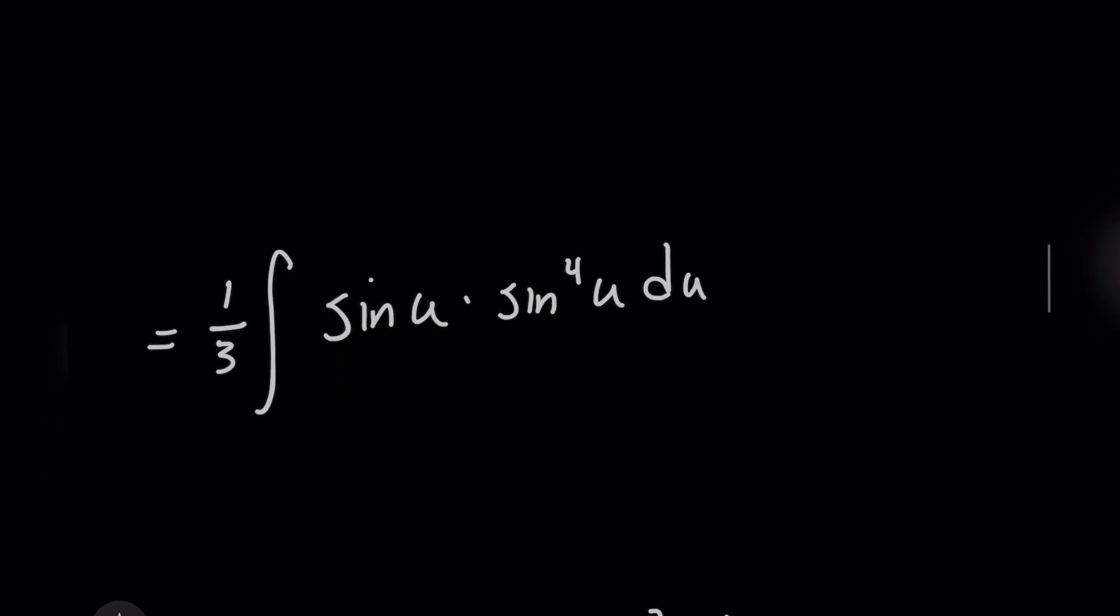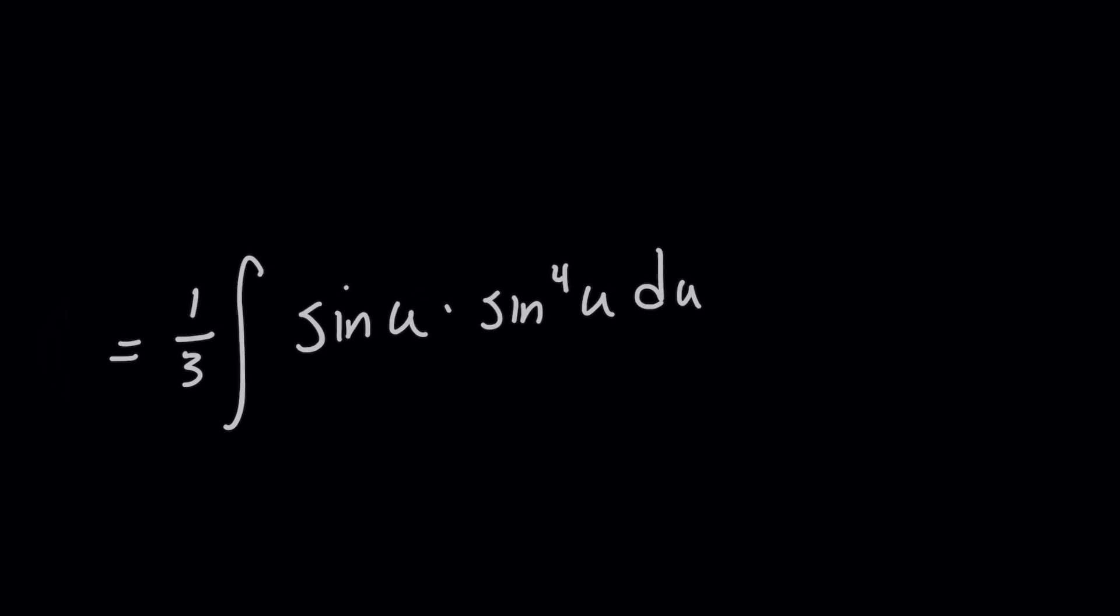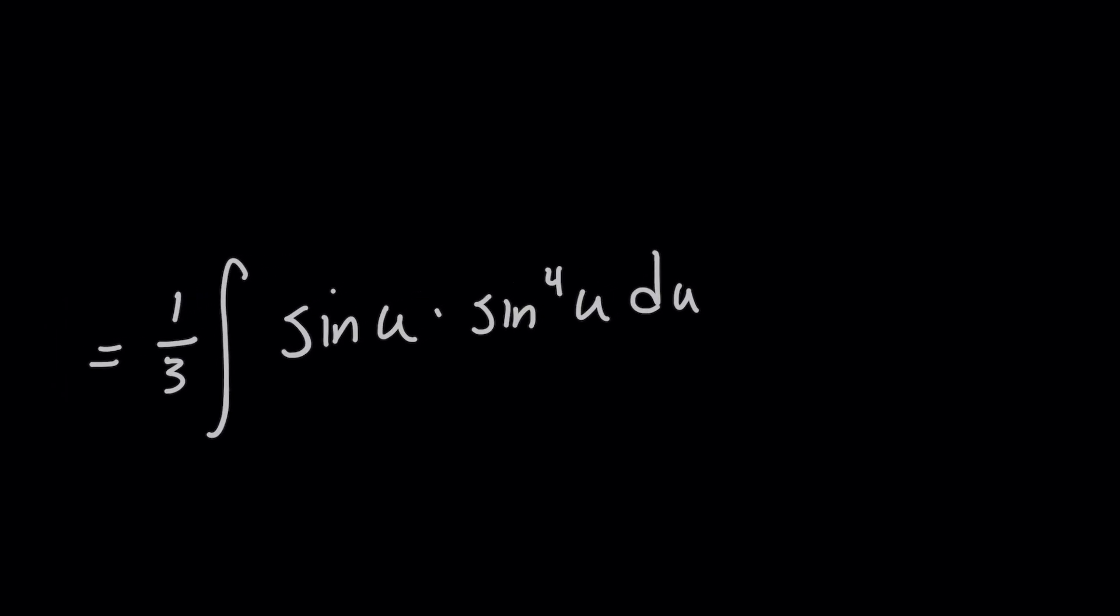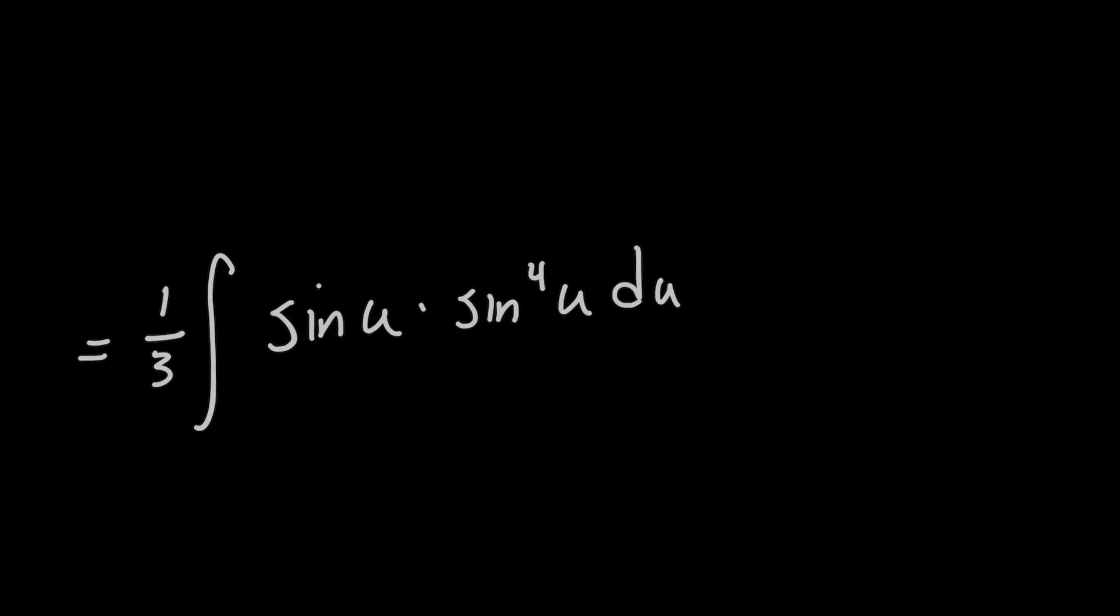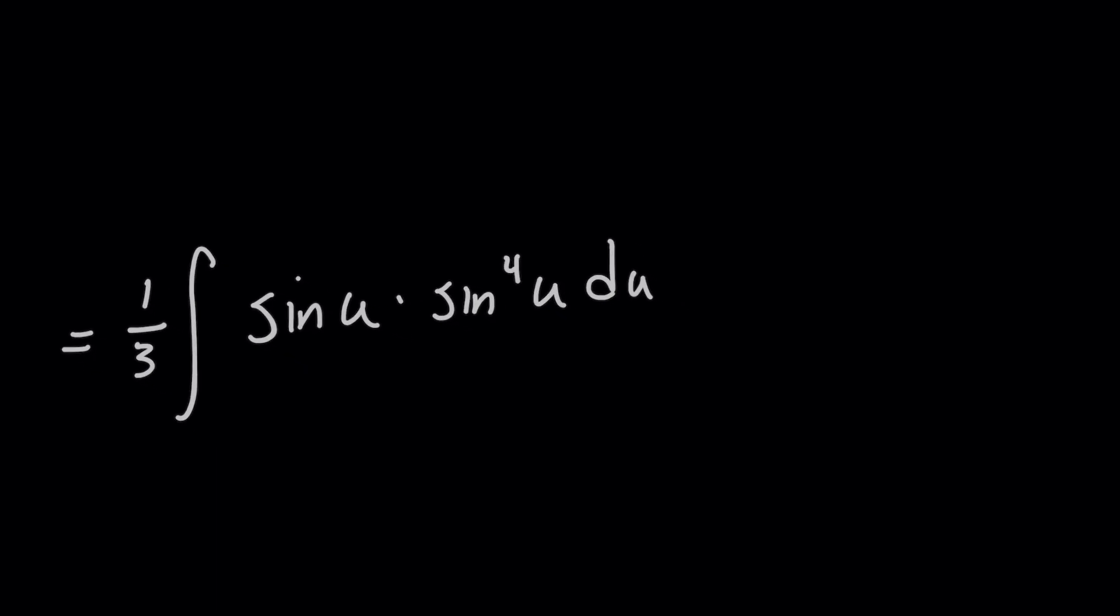And then to save yourself some time, remember that you can always break up a power into parts. Isn't sine to the fifth of u the same as sine of u times sine to the fourth of u? Now by inspection, it looks like I just made this problem tougher because now I've got two sine terms. But the goal here is to try and transform the problem into something that will allow us to have an expression of both sine and cosine, where we could do another u-substitution.